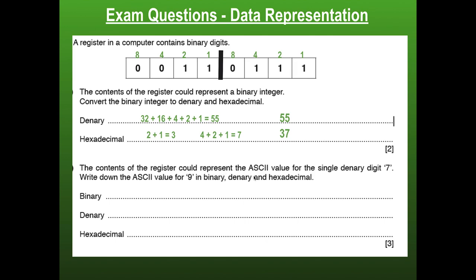The register could represent the ASCII value for the single denary digit 7. This section is the ASCII code part — this is the binary for 7. Now it says write down the ASCII value for 9. You might wonder how you're supposed to know the ASCII value for 9 without memorizing the table — you don't need to. You're simply going to change this section to be 9, or if it's just two more in sequence, add two to the binary number. So I've just made this into a 9: kept the ASCII prefix bits the same and made the lower bits 8 plus 1, which equals 9. That's the ASCII value.